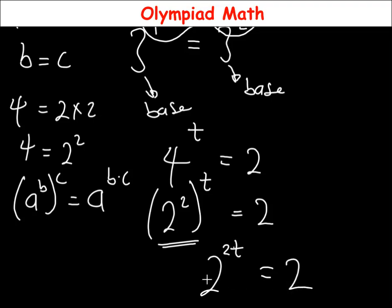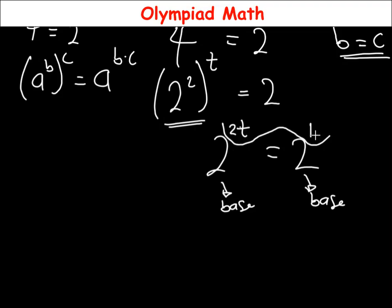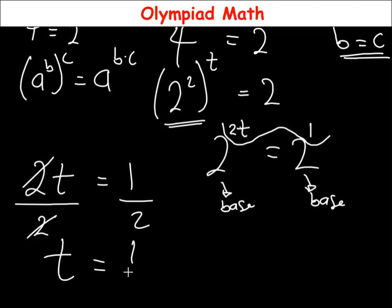Since the bases are equal, we compare the exponents. Note that the right-hand side 2 has an implicit power of 1, so 2t = 1. Dividing both sides by 2, we get t = 1/2. We have found the value of t as 1/2.